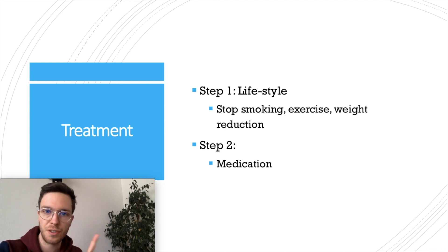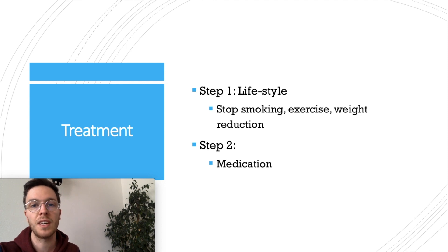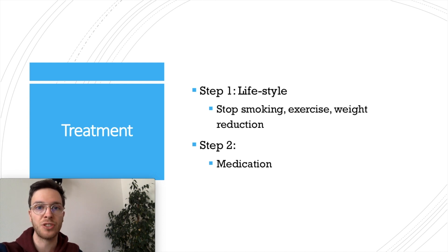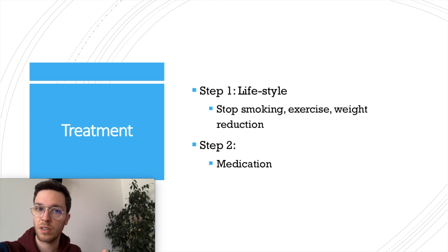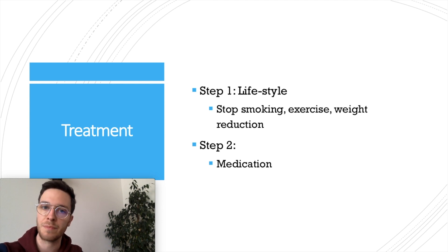How do you treat asthma? This is a two-step process. The first step is lifestyle interventions: do enough exercise, definitely stop smoking if you're still smoking, and reduce your weight if you're overweight. If this is insufficient, you go to step two — medication. Your doctor prescribes two kinds: one that will open up your lungs, and another that will lower the inflammation in your lungs, and both together will help relieve your asthma complaints.